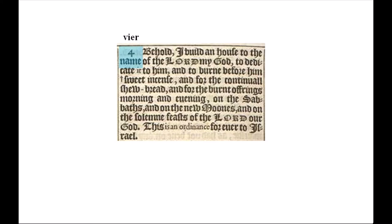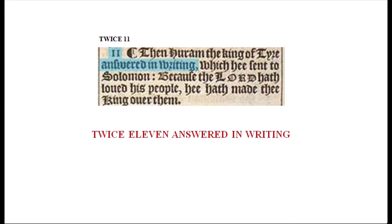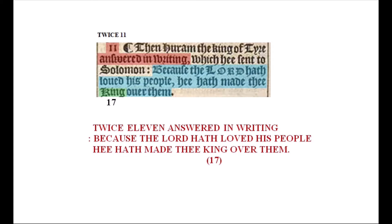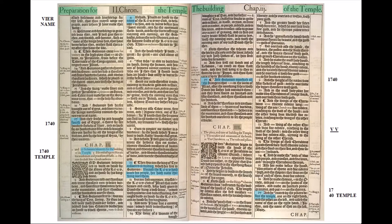In verse 4, the number sits above the word 'Name.' It's the only verse that begins at the top of either page, and if 4 in Dutch and German is 'veer,' this is telling us the name is Veer. The other twice-11 book and chapters had messages in verse 11. We're still in 2 Chronicles, chapter 2, which is written like an 11, so there might be a message in this verse. This can be understood as twice 11 because we're in the second book, chapter 2, which looks like 11-11. So this reads: 'Twice 11 answered in writing,' which is exactly what de Vere did as Shakespeare. If we then start counting, 'king' is the seventeenth word. Read the message: 'Twice 11 answered in writing, because the Lord hath loved His people, He hath made thee king over them.'